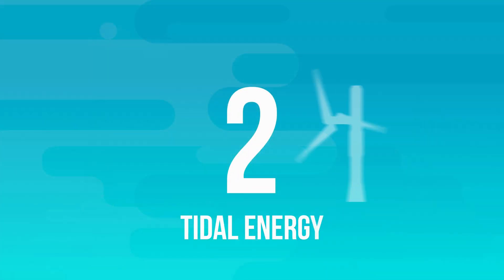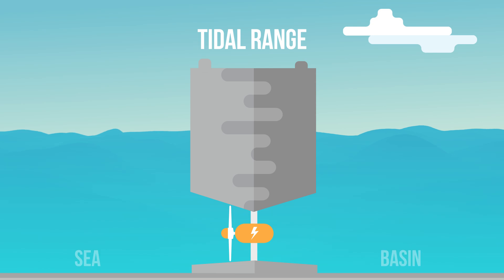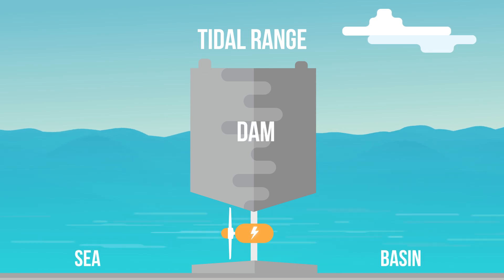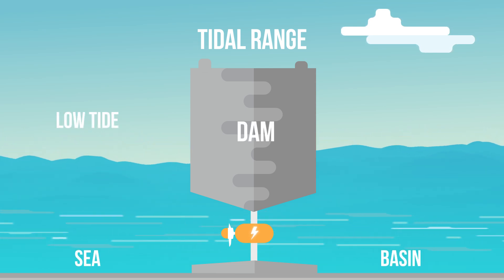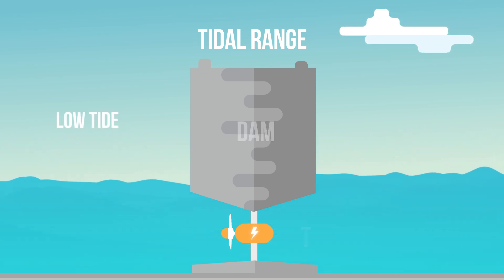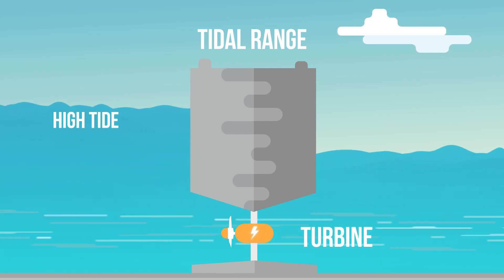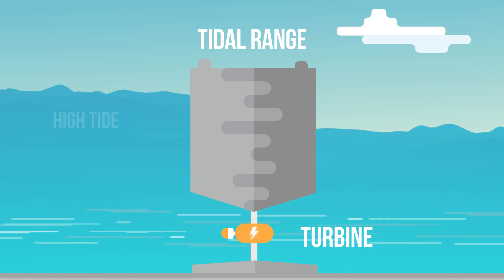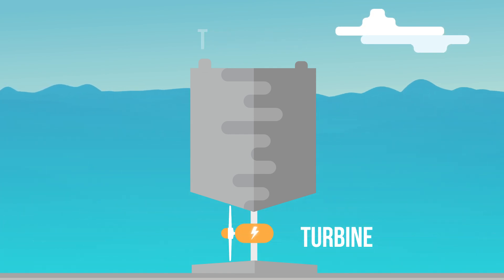There are two main forms of tidal energy. Tidal range is a dam that uses the difference in sea level between high and low tides. A turbine converts the potential energy into electricity, just like in a conventional hydropower plant.